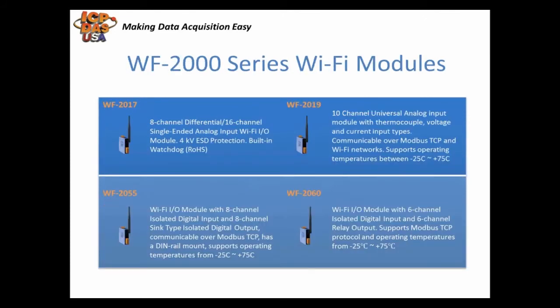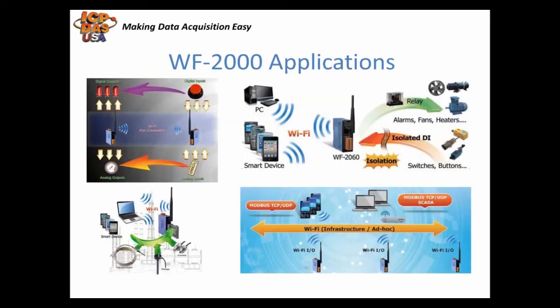Our Wi-Fi data acquisition modules comply with the IEEE 802.11 B&G standards and can work with standard Wi-Fi routers. Wi-Fi provides an easy way to incorporate wireless connectivity into monitoring and control systems. They support Modbus TCP and UDP protocols and network encryption configuration. They can be used with free Easy Data Logger, Modbus-based controllers, and SCADA software. Wi-Fi data acquisition IO modules are being used in applications where wiring is inconvenient, for taking measurements and triggering outputs, and with smart devices like smartphones and tablets for monitoring and control.